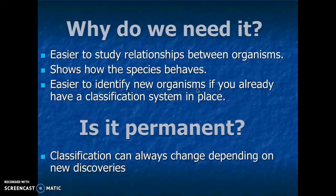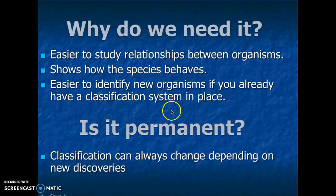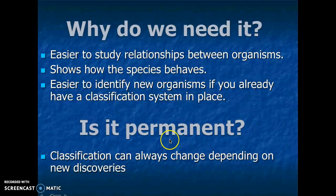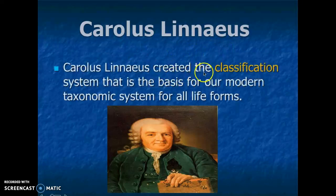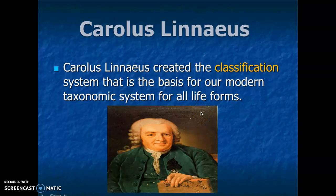Is the system permanent? Classifications can always change depending on new discoveries. A lot of times we make new discoveries about organisms and then we realize that perhaps we had it wrong the first time, or maybe we discover new ways that we can classify them or separate them further, and then we basically change the system a little bit. The idea is that this is not a fixed system — it is something that is sometimes changing. The scientist that did a lot of work for this is Carlos Linnaeus, and he is basically the founder and creator of the classification system that we know of today as the basis for a modern taxonomic system for all life forms.